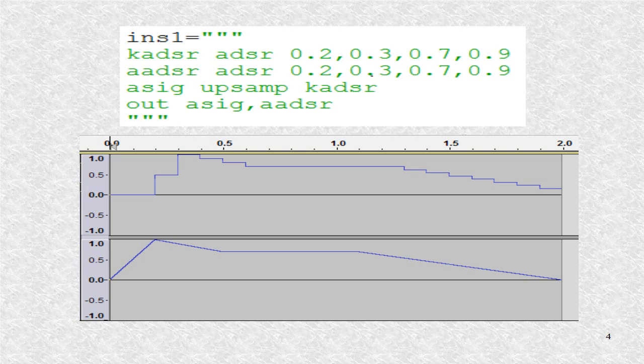This shows an instrument string using the ADSR opcode and the WAV file it results in. The attack time is 0.2 seconds and the decay time is 0.3 seconds. The sustain value is 0.7. Finally, the release time is 0.9 seconds.